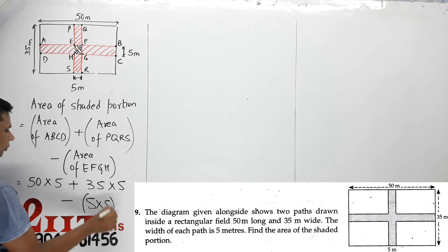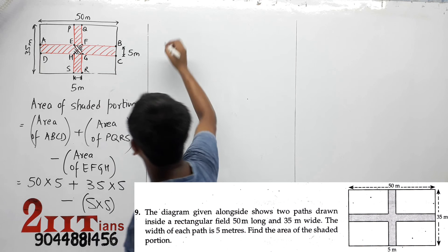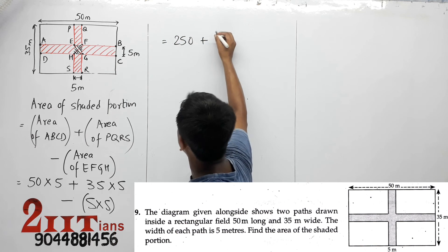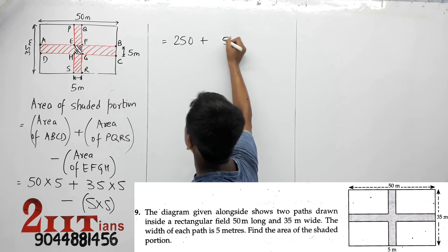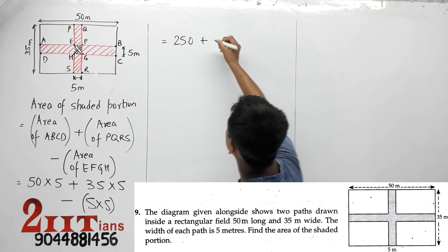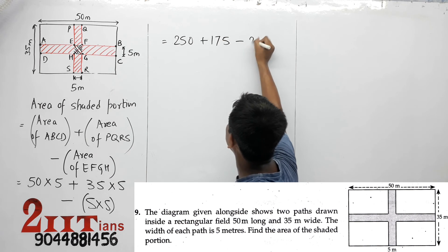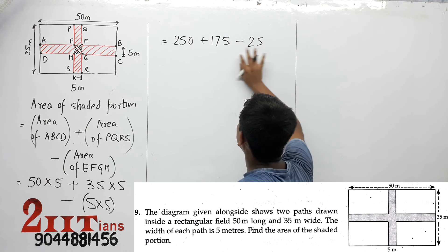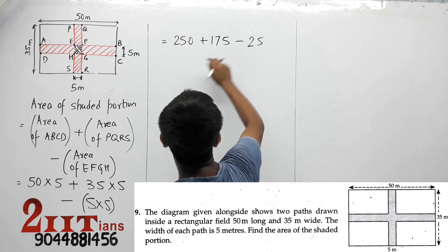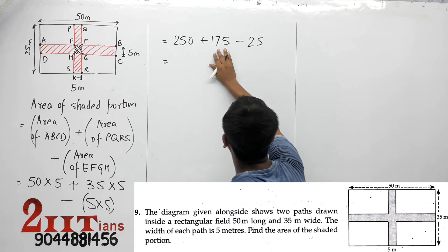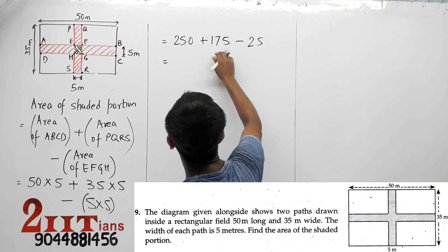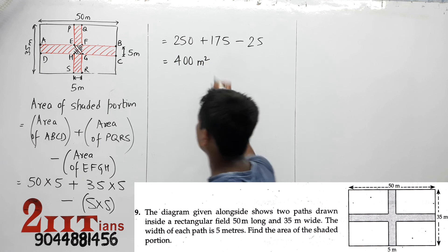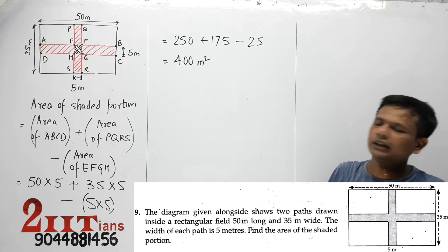Just solve this and your question is done. 250 plus 175 minus 25. 175 minus 25 is 150. 250 plus 150 is 400 meter square, 400 meter square.